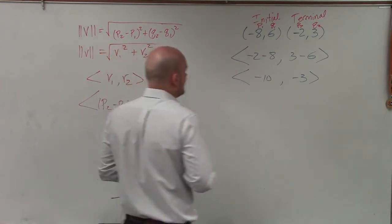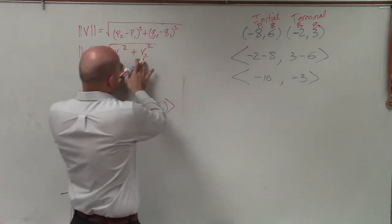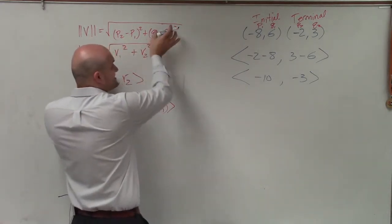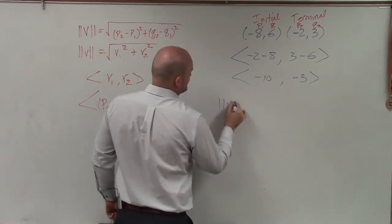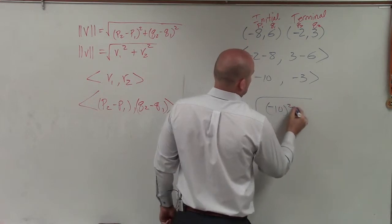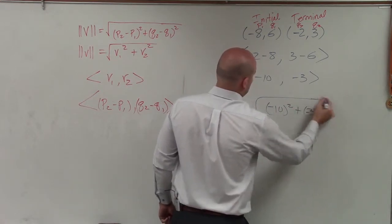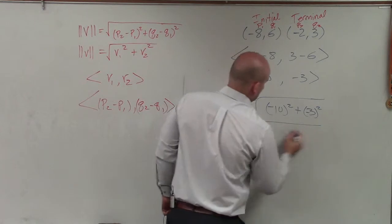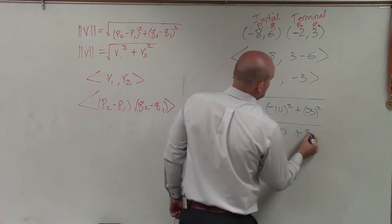Now what I need to do is go ahead and plug it into this formula, which is the same as that one. The magnitude of my vector v is going to be negative 10 squared plus negative 3 squared, which equals 100 plus 9, which equals the square root of 109.